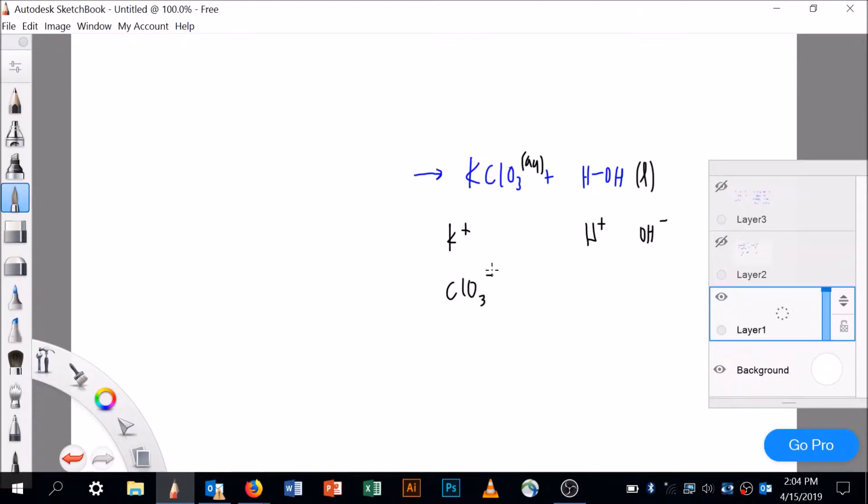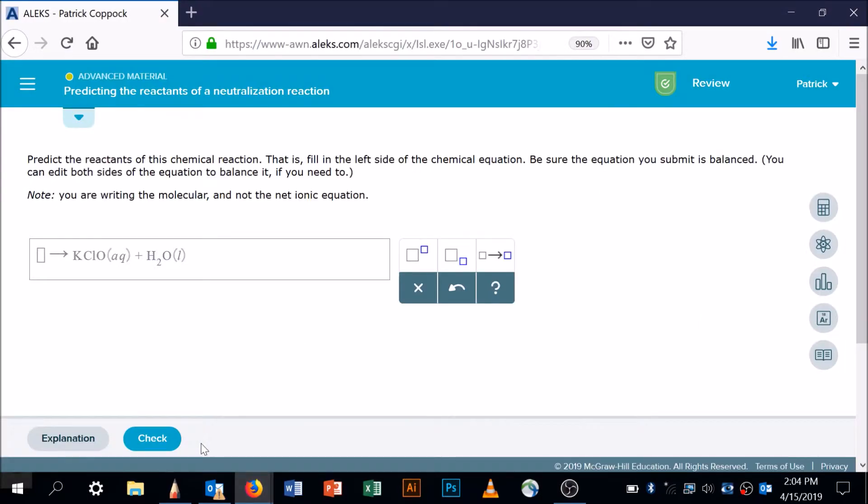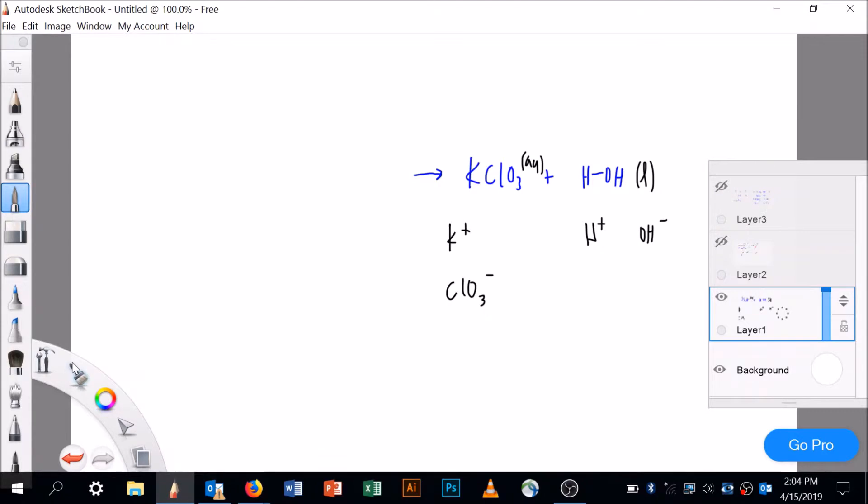This is liquid, so it really is H2O, but we can think about it like this - H+ and OH-, and this was aqueous. So we can think about it like this - this is K+ and ClO-. Let me go back over here.